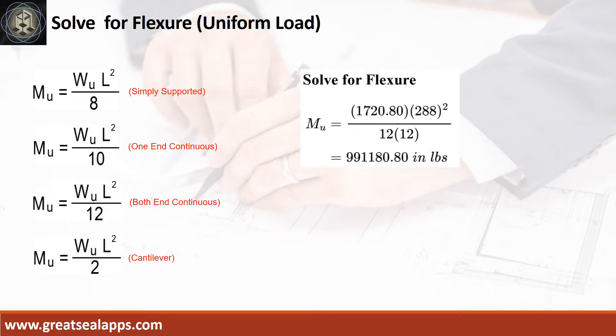Given factored load equals 1,720.8 pounds per foot, L equals 24 feet, the maximum moment is 991,180.8 inch-pounds.